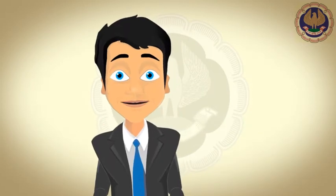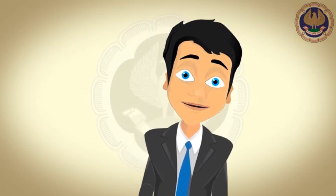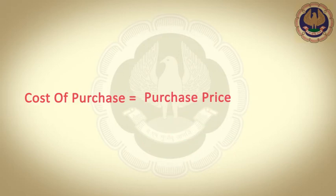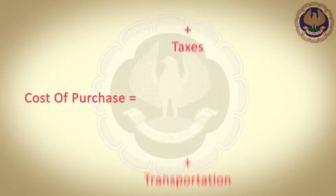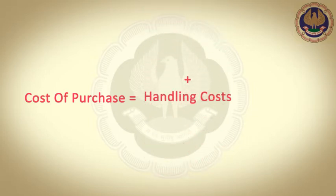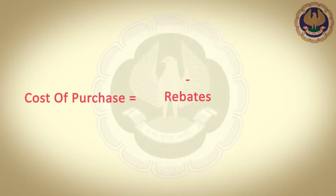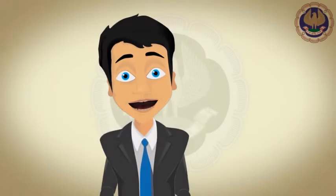Now, let us explore the methodology of computing the cost of purchase. As per AS2, cost of purchase is equal to purchase price plus import duties plus taxes plus transportation plus handling cost plus any other direct cost, minus trade discounts, minus rebates, minus any other direct deductions from purchase price.